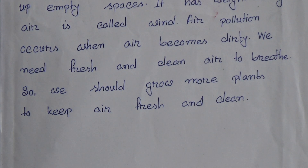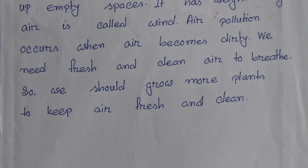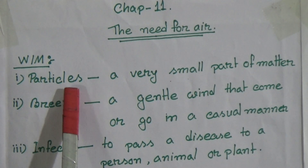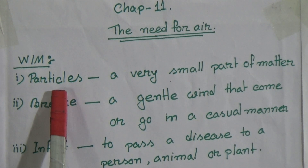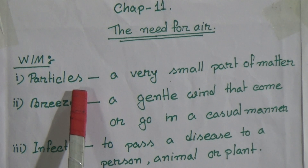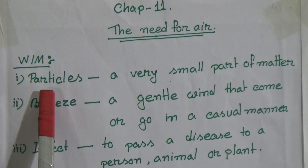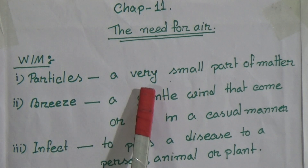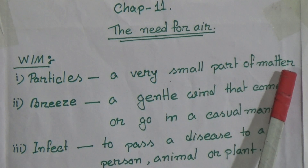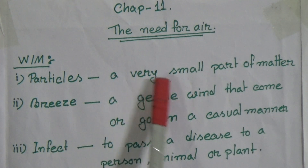Now we do word meanings. Number 1: particles — P-A-R-T-I-C-L-E-S. Particles means a very small part of matter. Number 2: breeze — a gentle wind is called breeze.